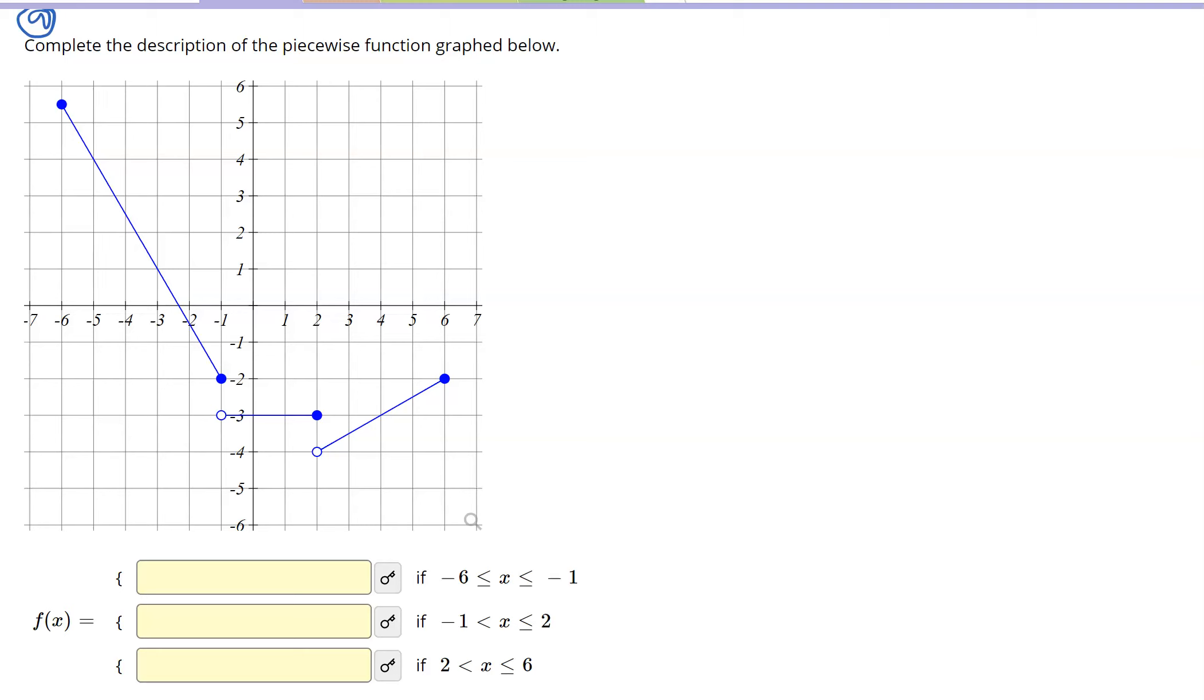This is problem number 9 on 2.2. What you have to do is find the three different equations and put them in the blanks for the different pieces. So I'm going to start with this horizontal line here. This is a horizontal line just at negative 3, and so I would just say negative 3 is the equation of that horizontal line.